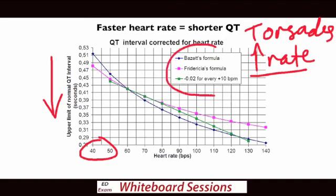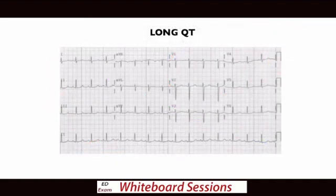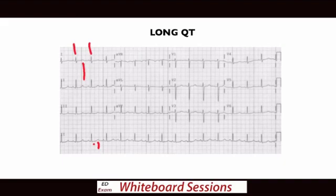Obviously treat the underlying cause, treat any toxic ingestions, but in the short term, if you increase the rate, you're going to shorten the QT interval and make it less likely that they're going to go in and out of torsades. You can see there are different formulas here you can apply - probably worth looking up to know the theory behind them for the exam. This is another example of an ECG with a long QT. Look at the RR interval in lead 1 and then look where the T-wave finishes - it's probably just beyond halfway. Always go right through your P, QRS, ST, and T-wave changes, and at the end, always remember to go back and double check the QT interval.